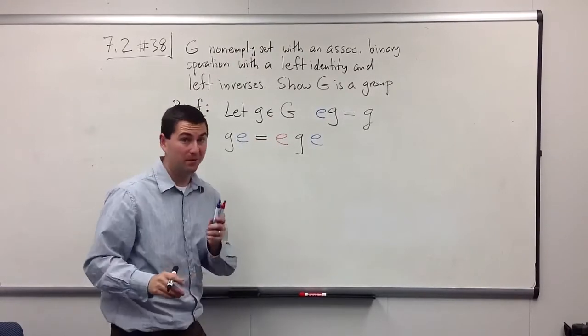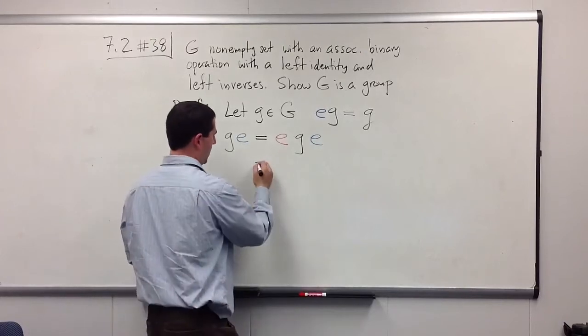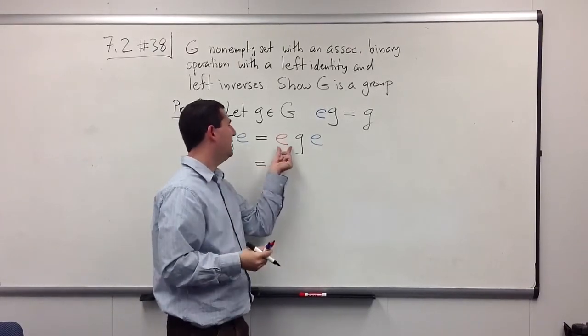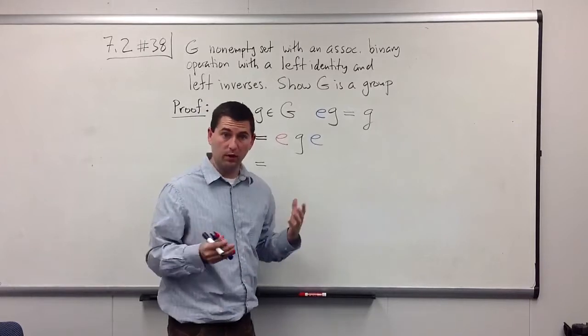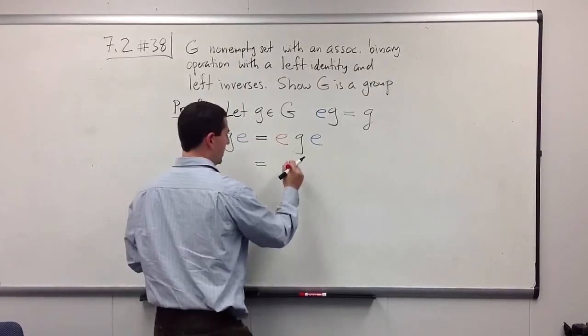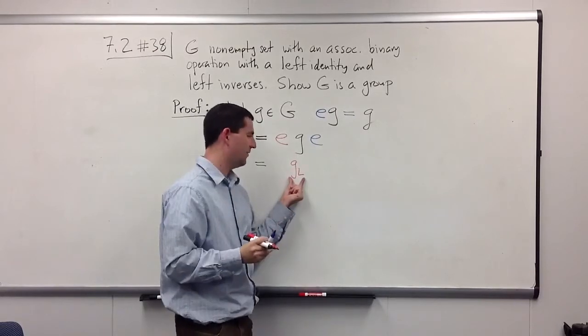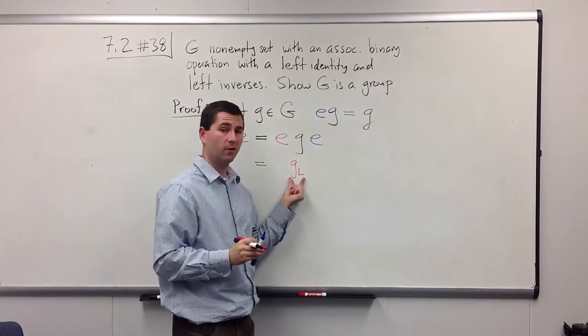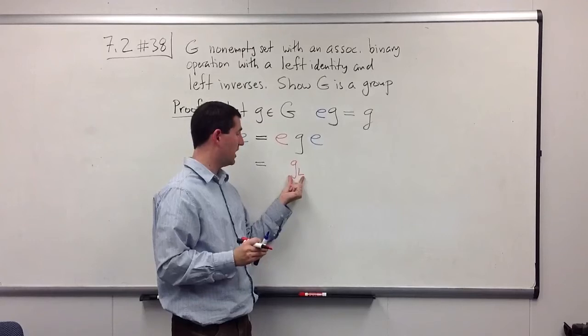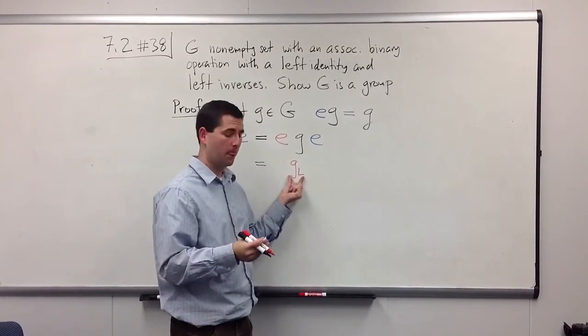Okay, now here comes the cool, tricky part. What I'm going to do is replace e by something else that I know happens to equal e. And the thing that I choose is first I'm going to take g_l. And I'm going to call this the left inverse for g. So when you multiply g_l times g, you should get back e.